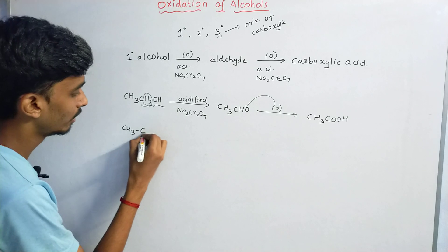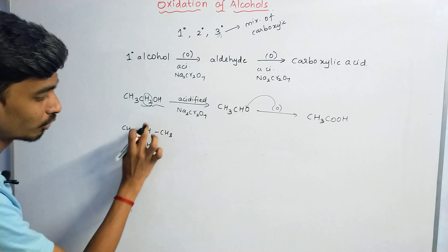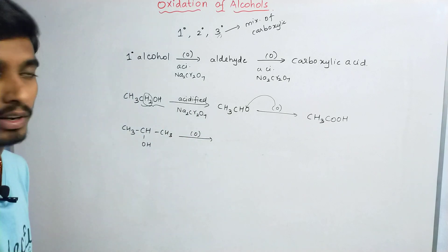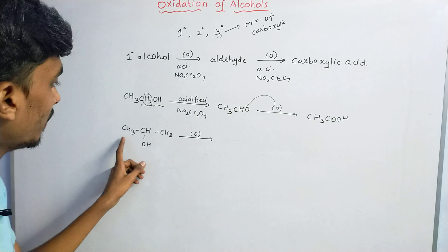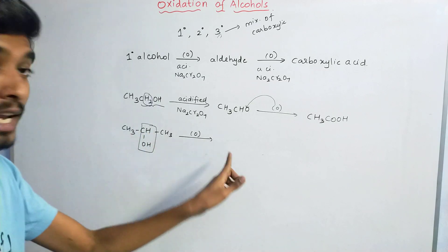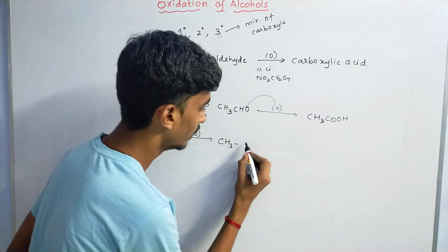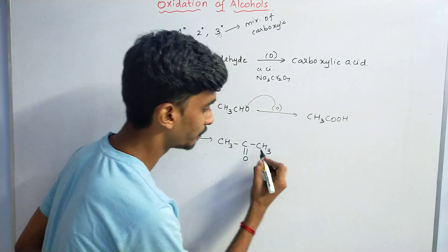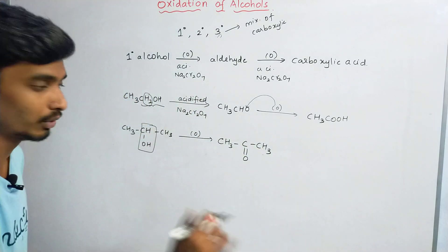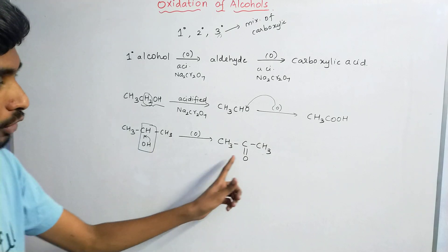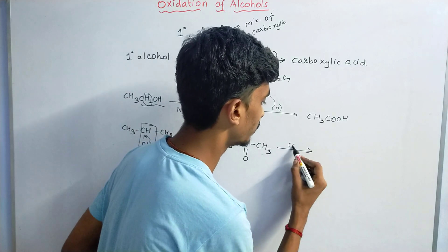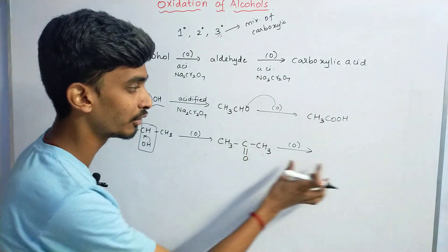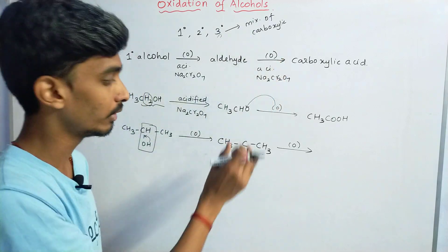For secondary alcohol, take propan-2-ol: CH3CH(OH)CH3. Using acidified sodium dichromate as the oxidizing agent, the secondary alcohol group (CHOH) is converted into a ketone group (C=O). The hydrogen is removed to form a double bond, giving CH3COCH3 (propanone/acetone) as the ketone product.